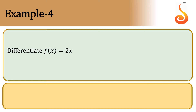Example 4. Differentiate f(x) = 2x. To solve this, we must know Rule 1: if y is equal to some constant into f(x), then dy/dx is equal to the constant into d/dx of f(x).